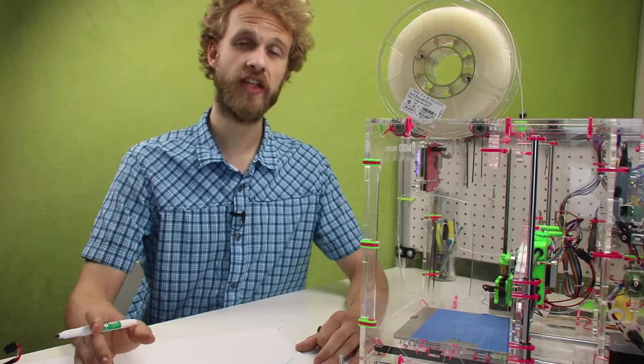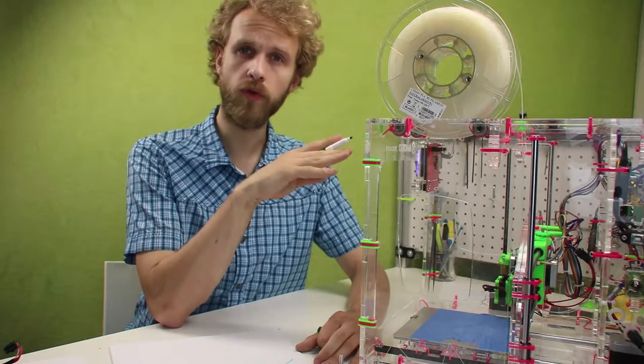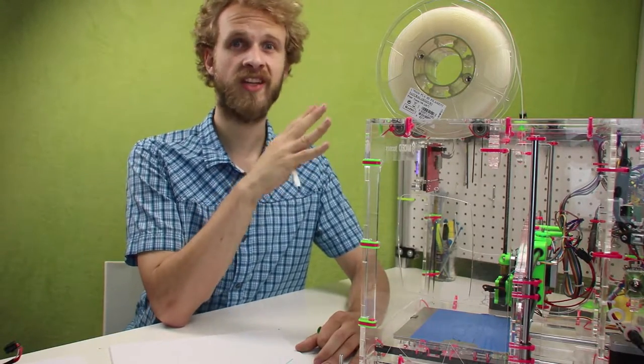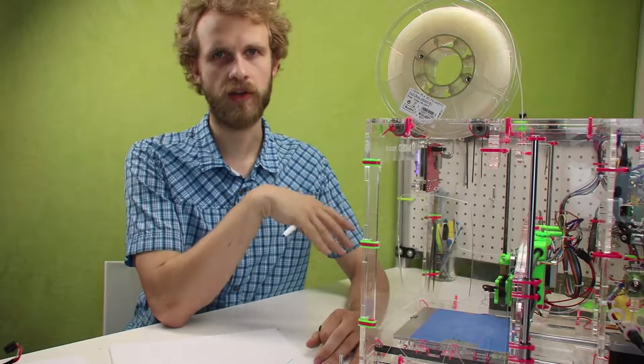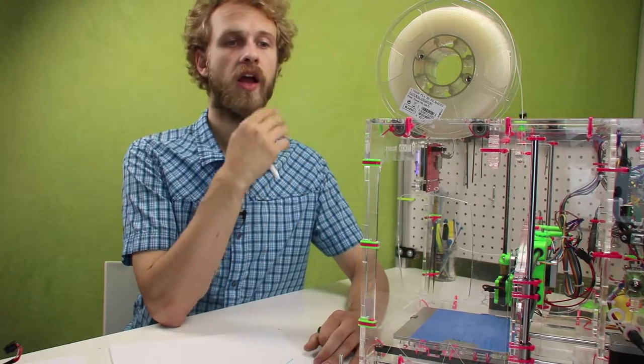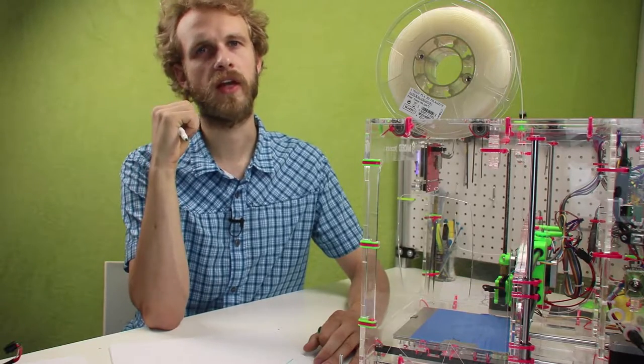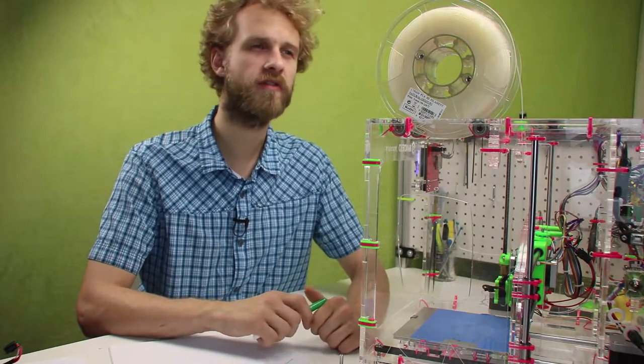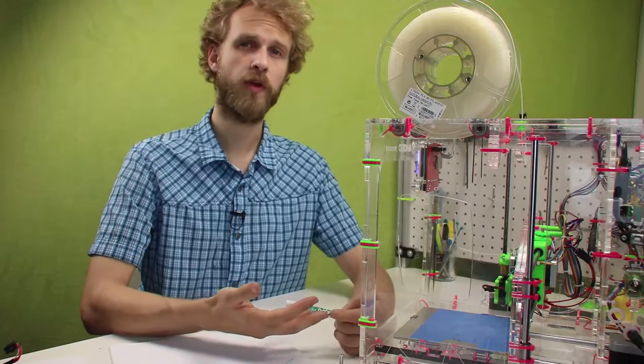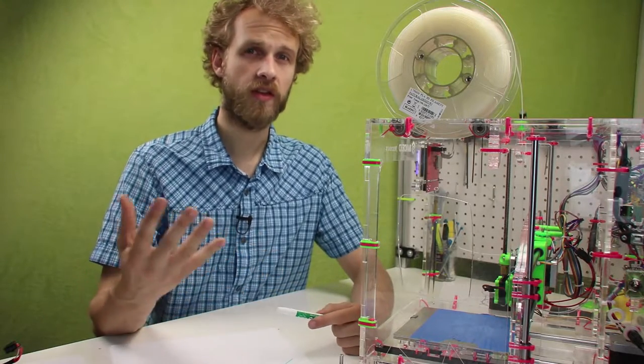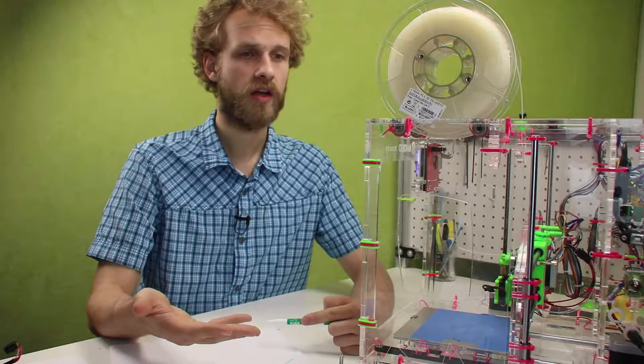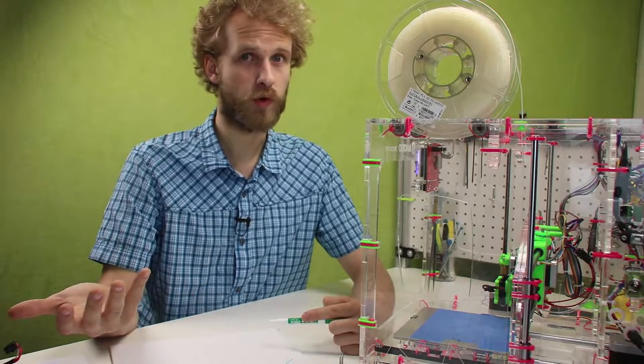Some people suggest that you actually measure every spool you want to print. You know, you measure at 10 different places and take average of that and then input that value into your slicer as 1.74 or 1.55. The trouble with that approach is that you need to have a micrometer. Normal vernier digital calipers are just not precise enough. And it also means that you have to re-slice the model every time you want to print something because the filament diameter is set in slicer. So it's awful for reusing g-code.